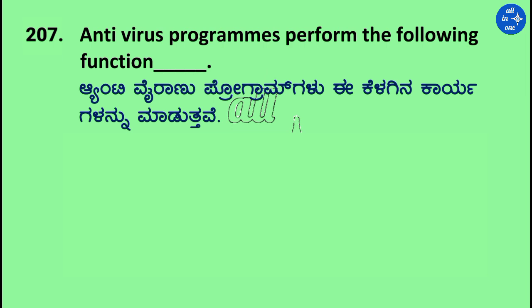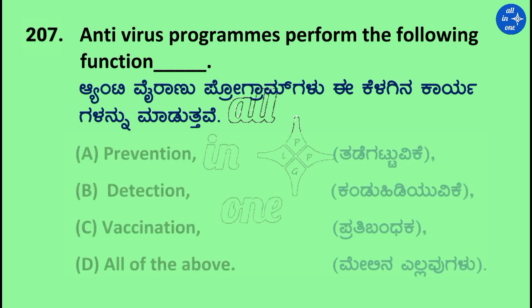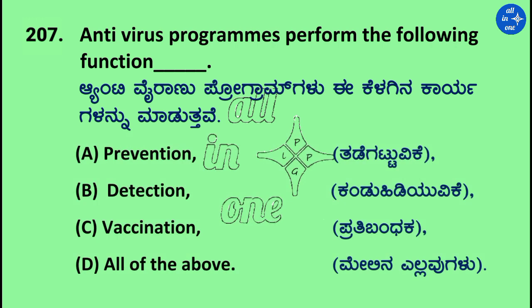Question: Anti-virus programs perform the following functions dash. Options: Prevention, Detection, Vaccination, and All of the above. Right answer is All of the above.